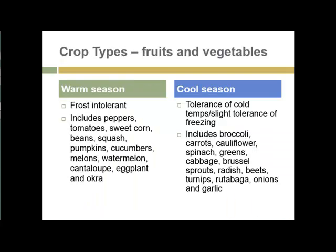One of the biggest things to consider in crop selection is the type of crop. From photosynthesis pathways in physiology, there are basically two types of crops depending on their tolerance to cool weather and cool soils. Warm season crops are frost intolerant and include many of our vegetable crops: peppers, tomatoes, corn, beans, squash, and all the cucurbits.